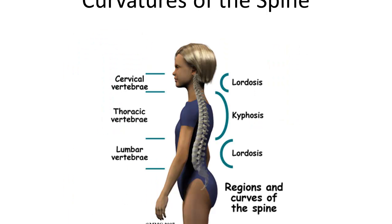A typical spine curves inward at the neck, outward at the thoracic region, then inward again in the lumbar region. These curves represent a normal set amount of curvature. Anything above or below that curvature is classified as lordosis or kyphosis. For example, a person with osteoporosis and a large hunchback would have kyphosis — excess outward curvature. Excessive inward curvature in the lumbar area is called lordosis, or sway back. Abnormal curvature usually needs physical therapy or supportive braces.